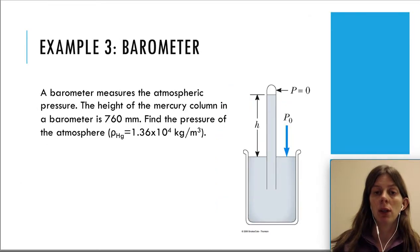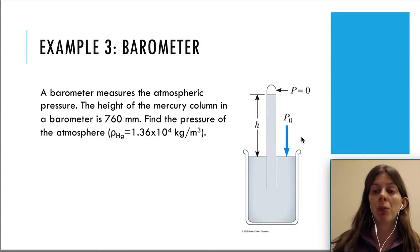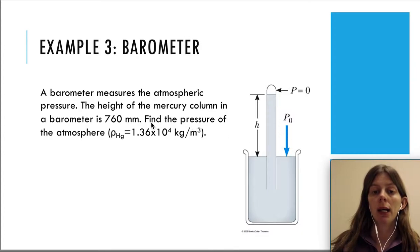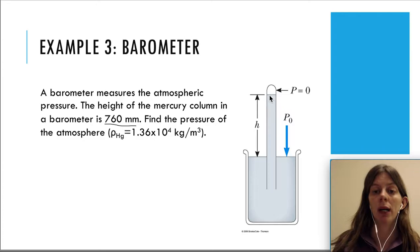Let's look at the barometer, which measures atmospheric pressure. You put a liquid in a tube and invert that tube in another container. That other container is open to the atmosphere, so the atmosphere presses down there. The more the atmosphere presses down, the more the liquid is pushed up the tube, and you can read the height to get the atmospheric pressure. In this example, the height of the mercury column is 760 millimeters. Find the pressure of the atmosphere — how much pressure is pushing down to cause the mercury to rise to 760 millimeters.